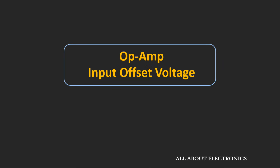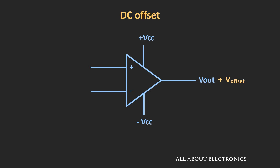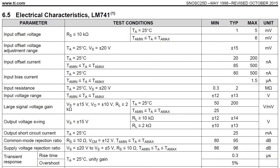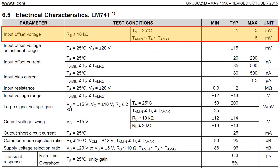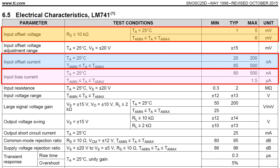Hey friends, welcome to the YouTube channel ALL ABOUT ELECTRONICS. In this video, we will understand about the input offset voltage of the op-amp. It is one of the DC offsets found inside the op-amp. This DC imperfection is the unwanted DC signal that you find along with the output signal at the output terminal. If you see the datasheet of any op-amp, you will find three parameters related to these offsets: the input offset voltage, the input offset current, and the input bias current.